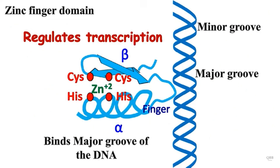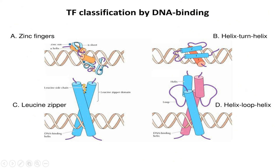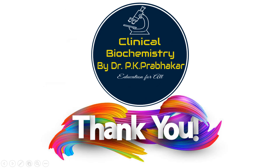Similarly, there are other DNA binding motifs. We have seen zinc finger motifs; we will later see helix-turn-helix, which is another motif that binds with DNA and regulates transcription. We also have leucine zipper, which helps in regulation, and helix-loop-helix. These are different DNA binding motifs that play a very significant role in gene regulation and expression regulation.